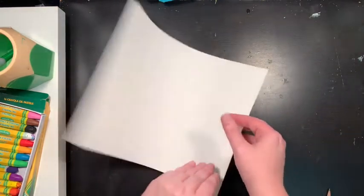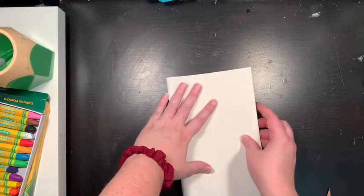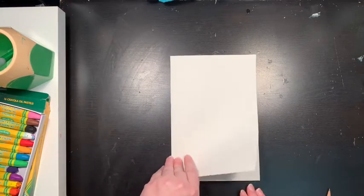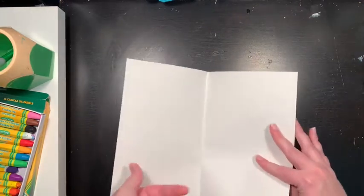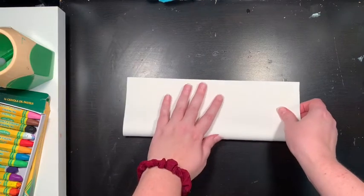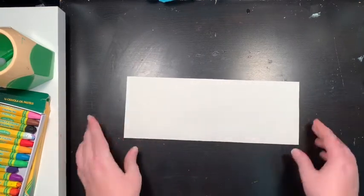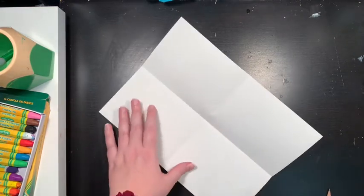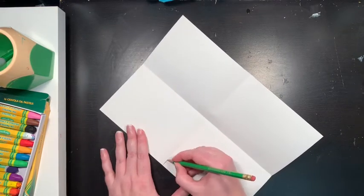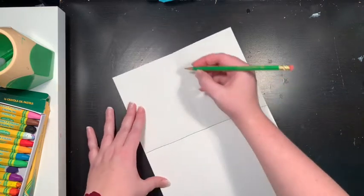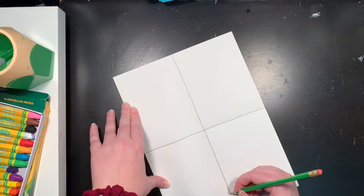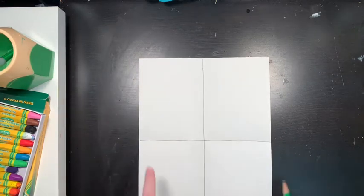So you're going to need a small piece of paper. And what I'd like you to do is fold it in half like a book or a hamburger. Then open it up and fold it back the other way in half. Okay, so now you should have four rectangles.